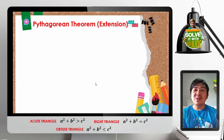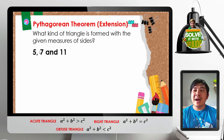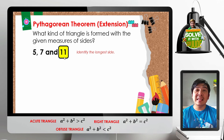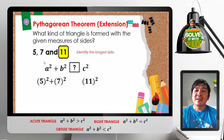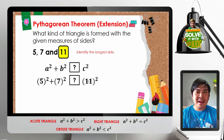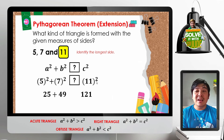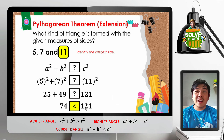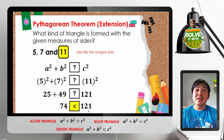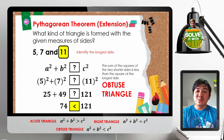For extension example number 2, we are given sides 5, 7, and 11. The longest side is 11, which substitutes for C. Substituting: 5 squared plus 7 squared compared to 11 squared. That is 25 plus 49 compared to 121, giving 74 less than 121. Since the sum of the squares of the shorter sides is less than the square of the longest side, it is an obtuse triangle.